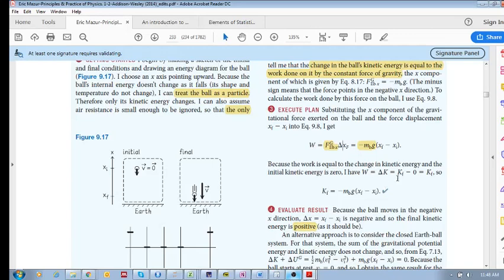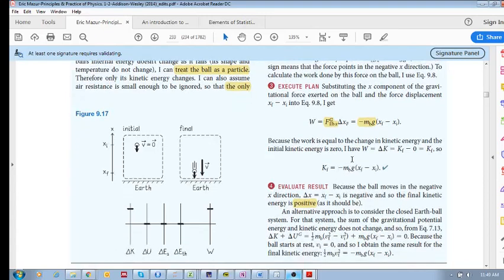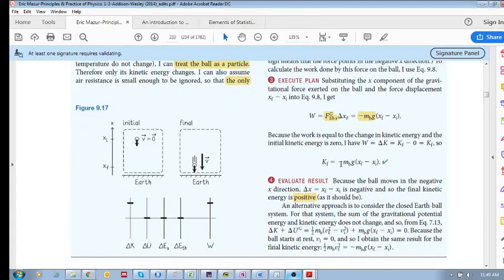And so, delta K, the initial kinetic energy is zero. The final kinetic energy is non-zero. So delta K is simply equal to K final. So we set this equal to delta K, that equals delta, which equals Kf.